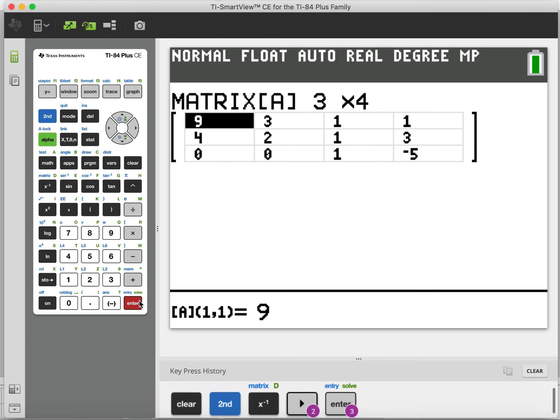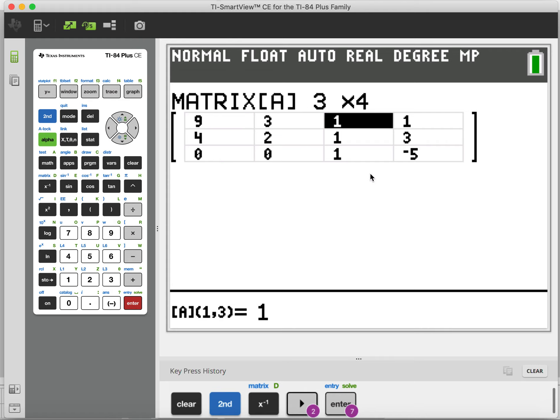And then you enter in the matrix. So you type it to three by four, and then you plug in all the data, which it appears, yes, I have already put it in, but you would do nine enter, and then it would move on to the next one. So I'm going to give you a second, maybe pause it and go ahead and type in that matrix.